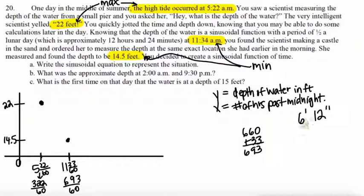And then halfway between 6 hours and 12 minutes is 3 hours and 6 minutes. So if I wanted to find out this value right here, I would add 3 to 5, that would give me an 8. I'm going to add 6 minutes to the 22, so that would be 28 over 60. So I've got 60 times 8 is 480, plus 28 would be 508 over 60.